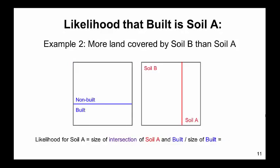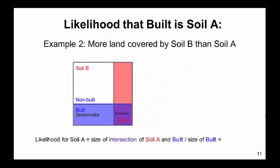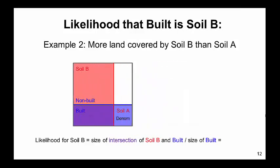Now let's calculate the likelihood that built is soil A. In this example 2, the denominator is the same as it was for example 1 because the built area is the same in both examples. The numerator is the intersection of soil A and built. The likelihood that built is soil A is 0.3 because 30% of the built land is on soil A. For likelihood that built is soil B, the denominator is the size of built while the numerator is the intersection of soil B and built. The likelihood that built is soil B is 0.7 because 70% of the built land is on soil B.